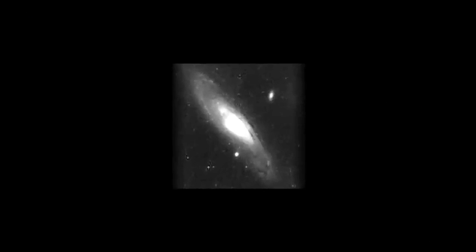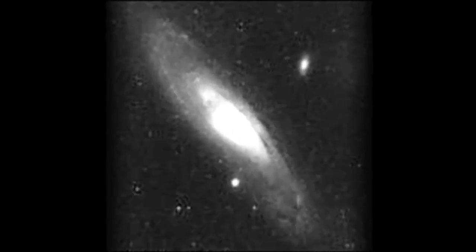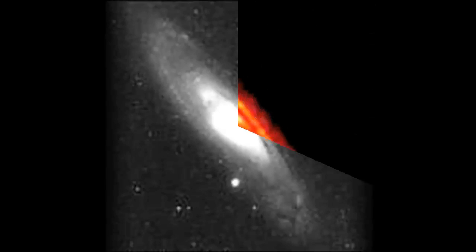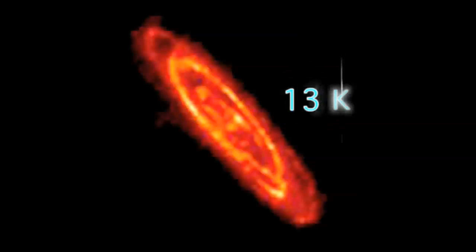Andromeda is one of the closest galaxies to our own and considered to be a typical spiral galaxy. However, ISO discovered that it was made of several concentric rings of very cold dust at around 13 Kelvin, too cold to be seen at visible wavelengths.